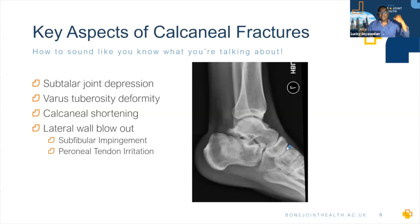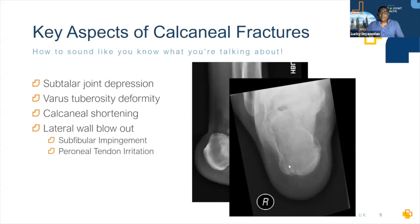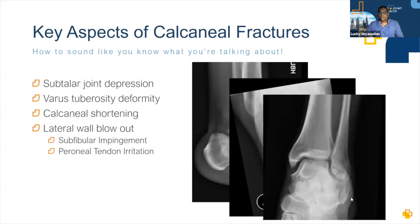Talk about posterior facet depression and subtalar joint involvement. Talk about the varus deformity: when broken, the tuberosity tends to go into varus, and the calcaneus also becomes shorter because the posterior tuberosity drives in — giving you a wide, short heel, which patients hate because they struggle with footwear. On top of that, lateral wall blowout occurs — like the sides of a squeezed brick popping out — which causes stuff to appear under your fibula, creating subfibular impingement and peroneal tendon irritation. Use these phrases and you'll sound like a pro when discussing calcaneal fractures.